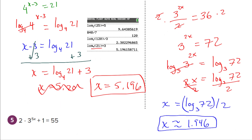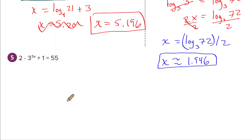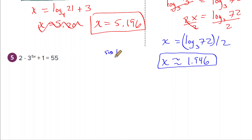For number five, treat the exponent term like an x. The equation looks like 2x plus 1 equals 55. Here's the order: first subtract 1 from each side, then divide by 2, then start taking logs. Pause the video and do number five yourself.